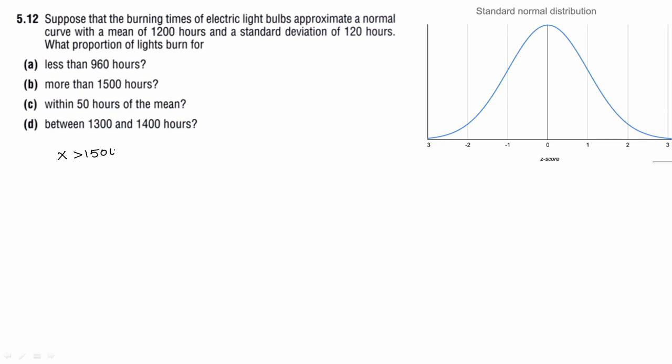Next, what proportion burns for more than 1500 hours? So x greater than 1500. Z equals x minus mu over sigma equals 1500 minus 1200 over 120, which simplifies to 2.5. So we need P of z greater than 2.5.